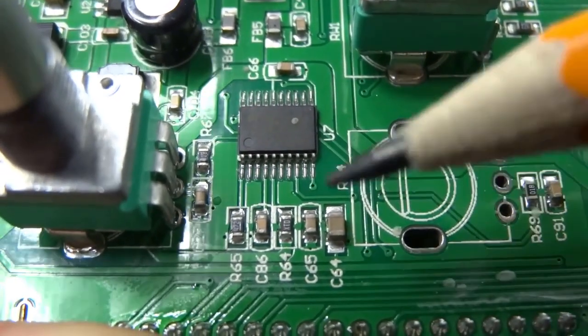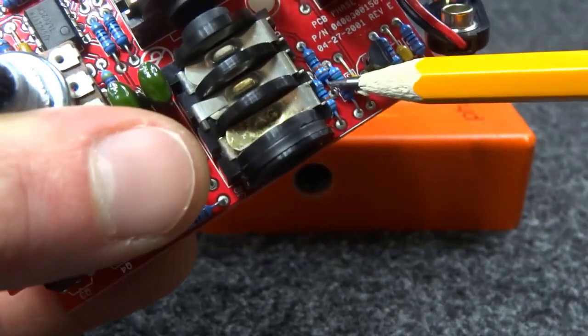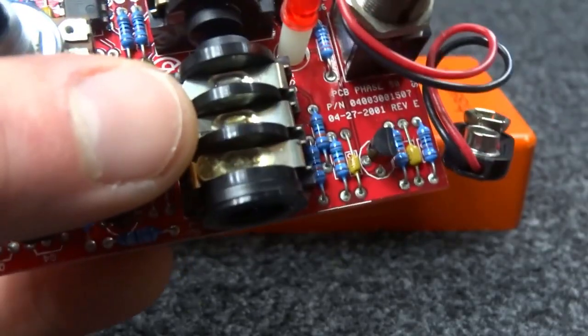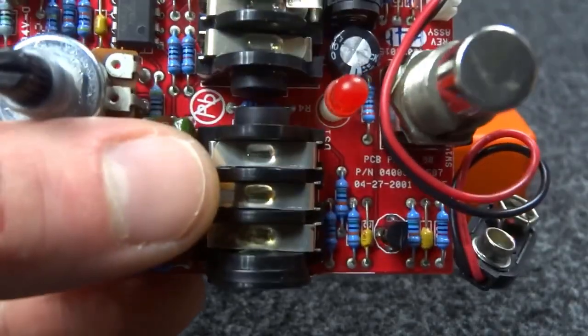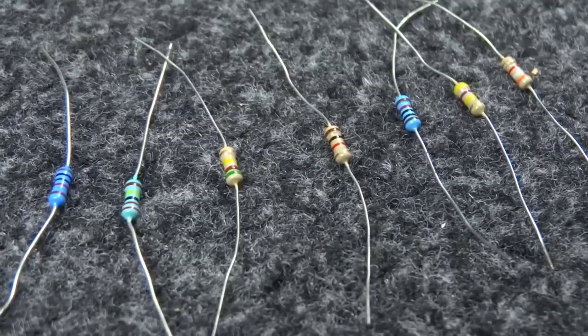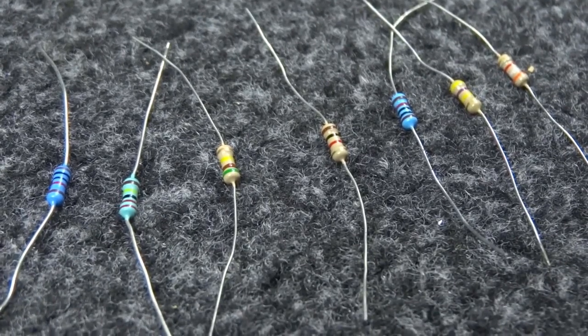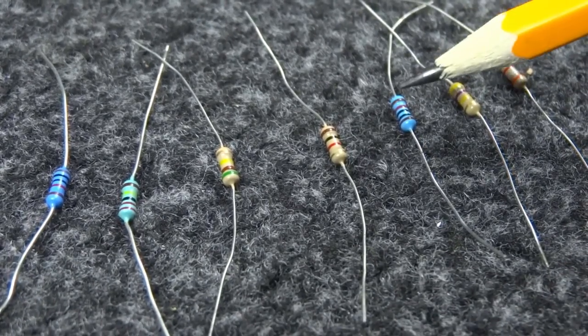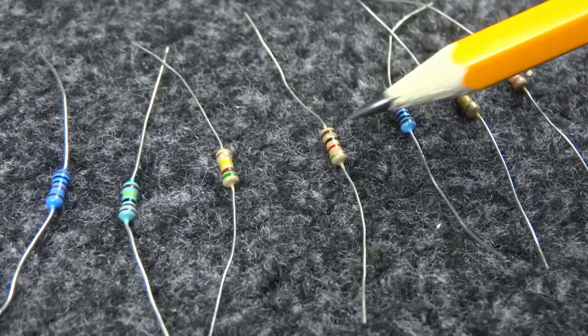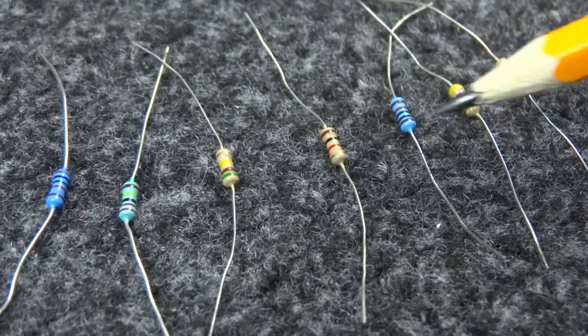Resistors are usually used as a part of filters to cut unwanted frequencies, to provide proper power for other parts. They can decrease volume of your signal or can be part of more complicated blocks that can amplify or modify your signal. Here you can see some new, not mounted, resistors.